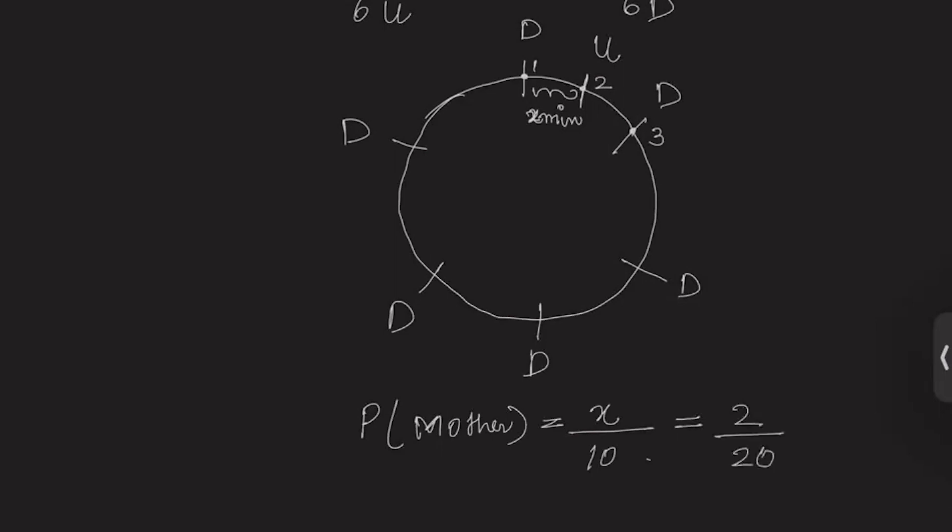Because in reality, out of 20 working days only two working days he is going to his mother, this equals 2 by 20. So by solving this equation, we get x equals 1 minute.